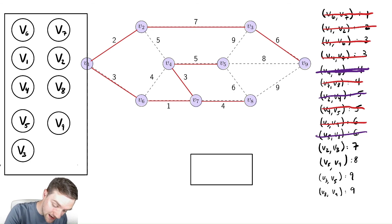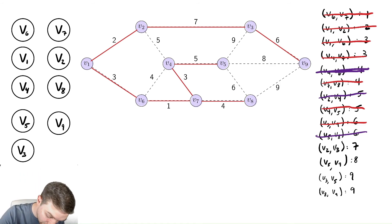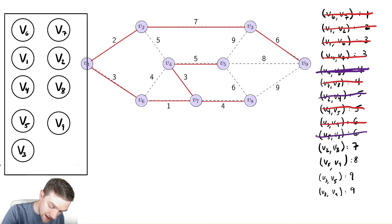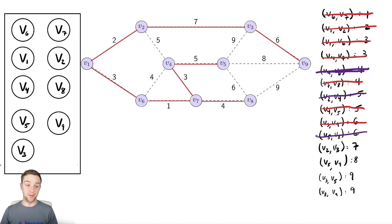And then we now have that every single vertex in the graph is now inside of the same set. Therefore, they are all connected via this minimum spanning tree. So we are done.